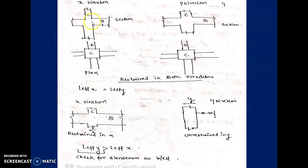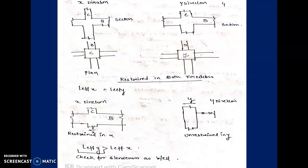In plan, this is the column with beams coming from all four sides. That means the column is tied in both the x and y directions. The column is tied in both directions — tied meaning the beam is resting over there and breaking the effective length at that point.